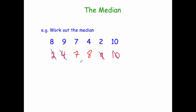Again, this time we're left with two in the middle. Because there are two in the middle, we need to find the middle of 7 and 8. The middle of 7 and 8 is 7.5, so the median is 7.5. You could add them together: 7 plus 8 is 15 and half of that is 7.5. Or you can just use common sense.